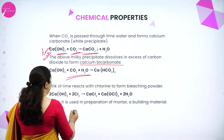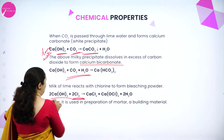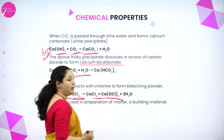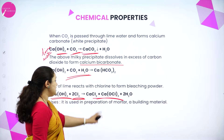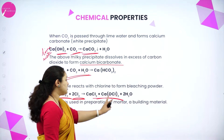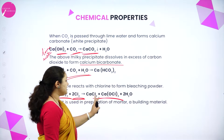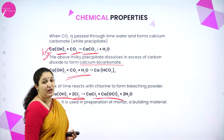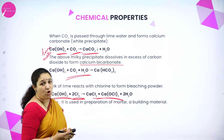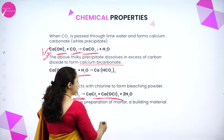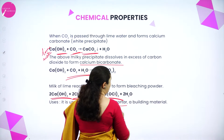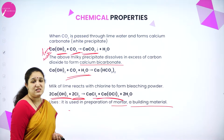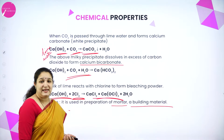If we pass chlorine through lime water, it will form bleaching powder — CaOCl₂ — along with CaCl₂ and H₂O. Slaked lime is used in the preparation of mortar and in building materials.